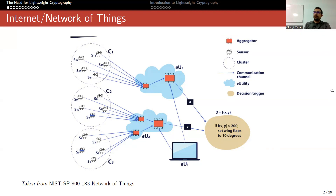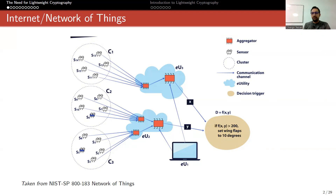The problem is that these small devices are really small in terms of capacity — they don't have much computing power or memory. But we still communicate with them and we want those communications to be secure. We want to use cryptographic measures for them — this is where lightweight cryptography comes into play.